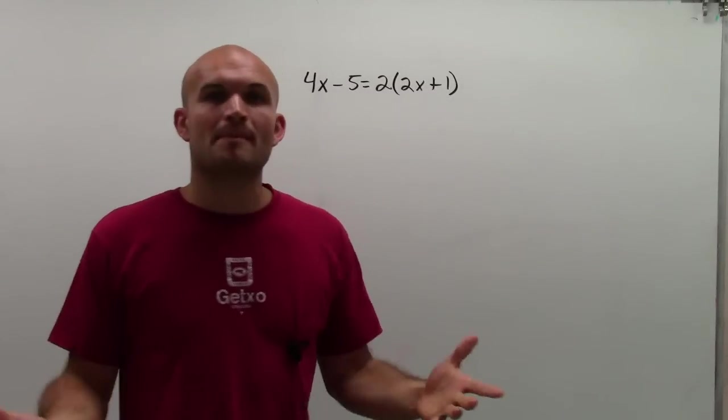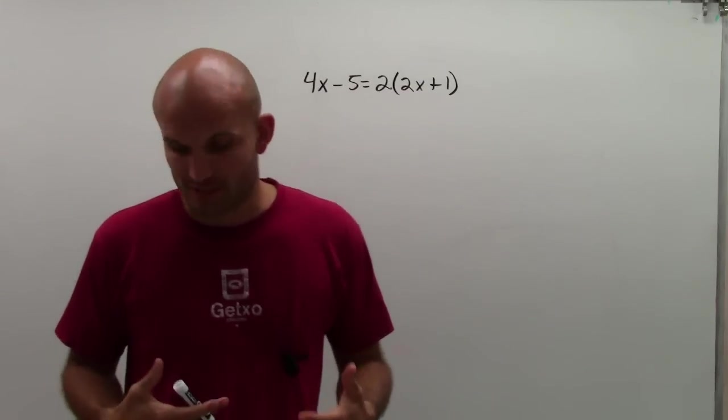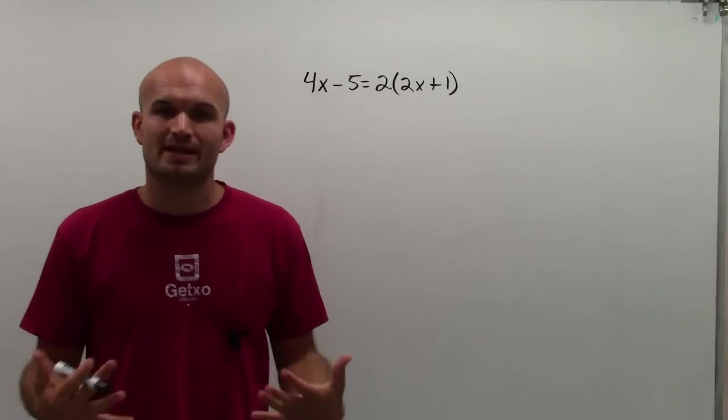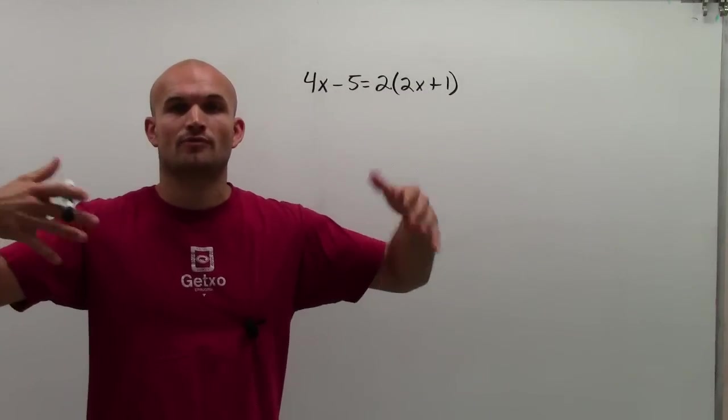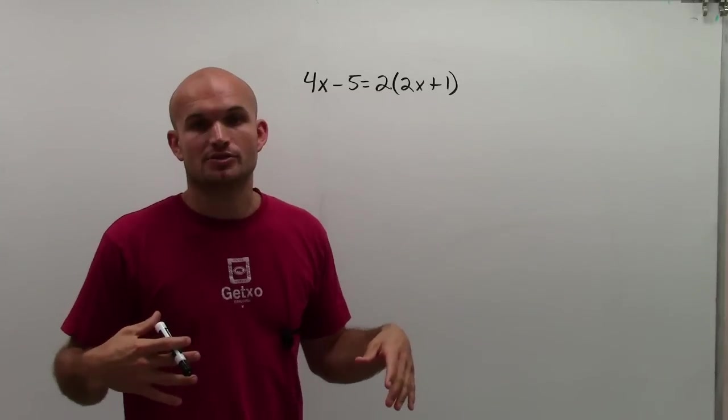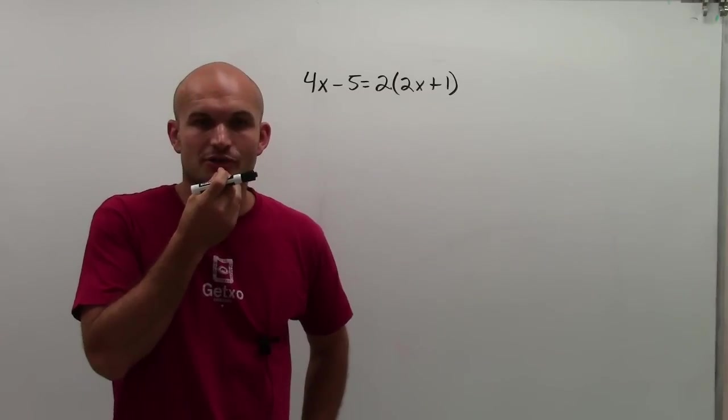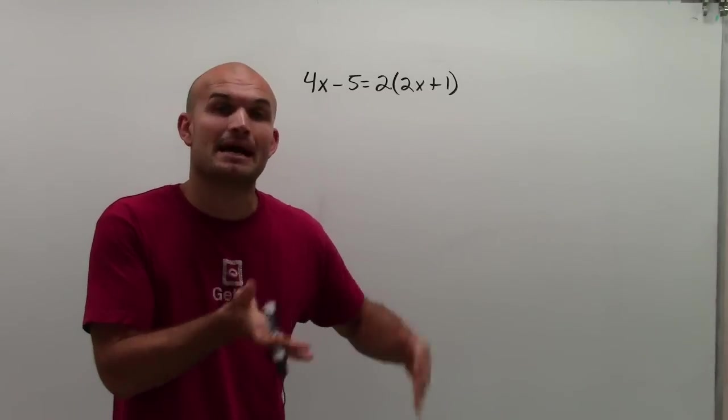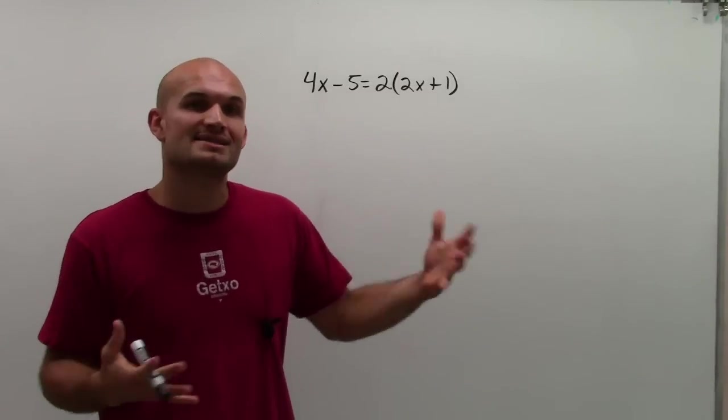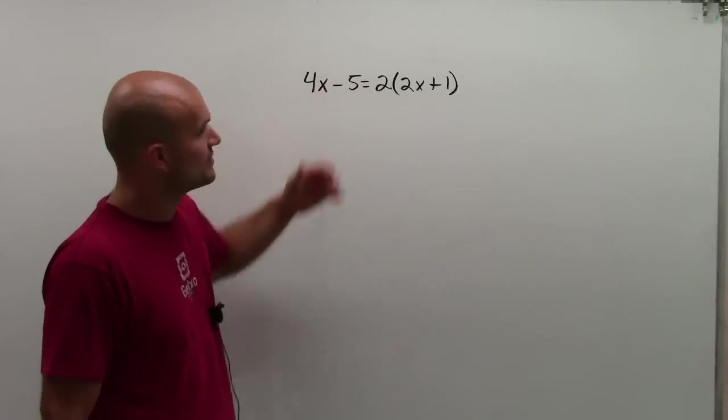So just remember when dealing with a multi-step equation like this, or even just when solving any kind of equation, remember we've got to get our variable by itself. So the main important goal is to get the variables on the same side. But before we can do that, we want to see if we can simplify either side first.